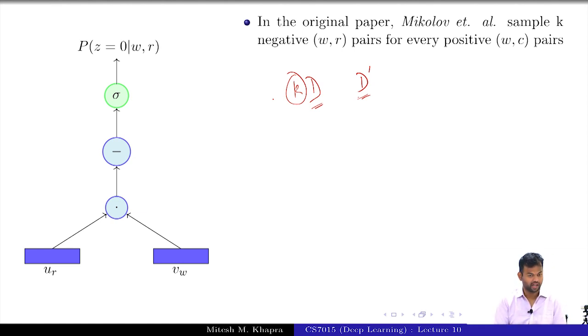This K was a hyperparameter which was tuned based on the data that they had. Can you guess how they would have tuned it? What do you tune your parameters on? How did you tune your parameters for the backpropagation? Using what? A validation set. Is it too early in the morning? Validation set, ok.